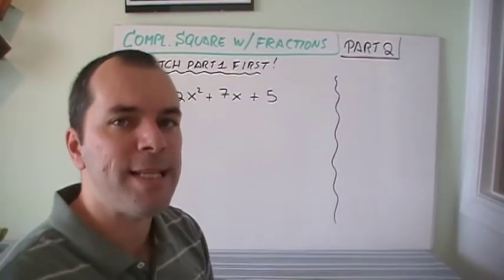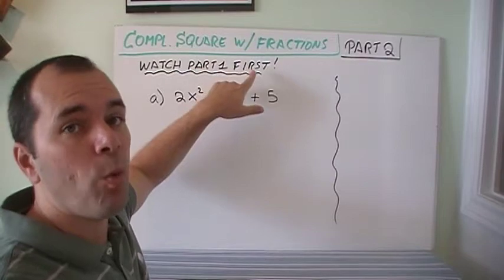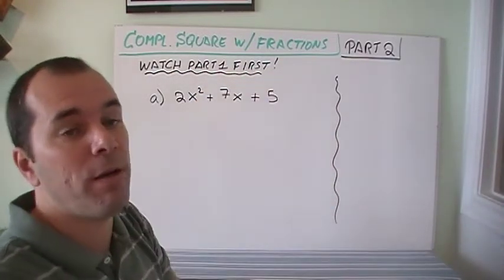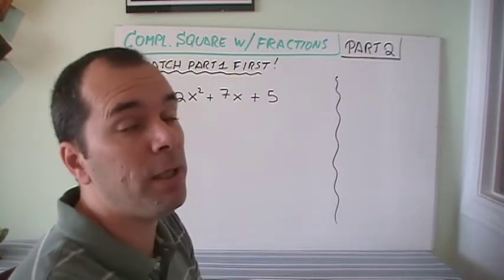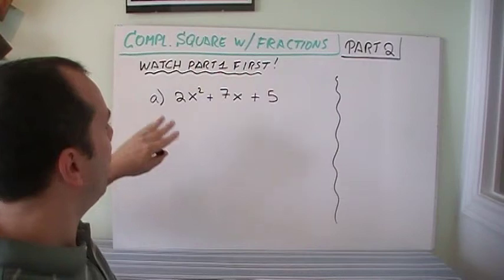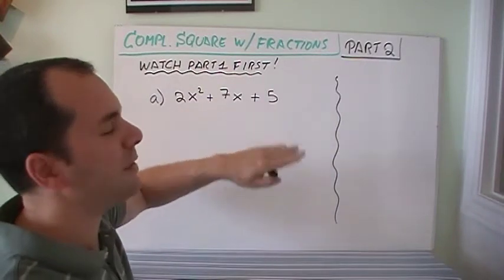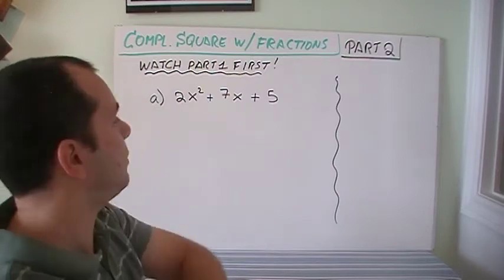Okay, so here it goes. Completing the square with fractions. Reminder, you must have watched part one for this to make a little bit more sense. Now if you're super comfortable with fractions, not a problem, but if not, you really need to watch that. It came on the left side of the camera today. Okay, 2x squared plus 7x plus 5, that's in standard form. If I want to put it in vertex form, I need to complete this square.